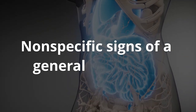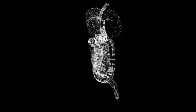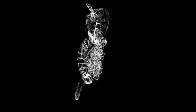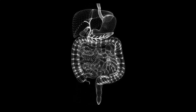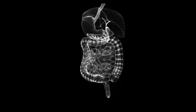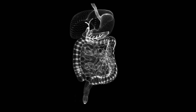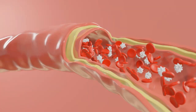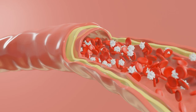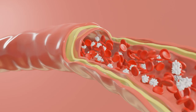Nonspecific signs of a general nature include constant weakness and chronic fatigue, increased irritability and disturbed sleep, unhealthy skin color, a tendency to rashes, brittle and thin hair, frequently occurring allergic reactions, the appearance of bad breath, and reduced capacity for work. All symptoms develop as a result of reabsorption into the blood of toxins from the rectum and the development of secondary intoxication.